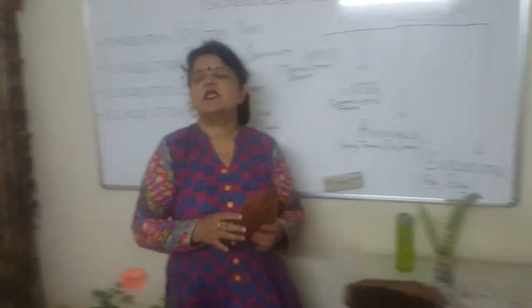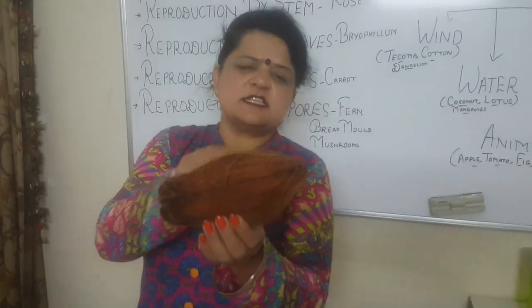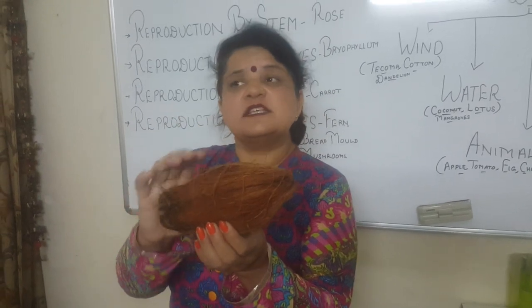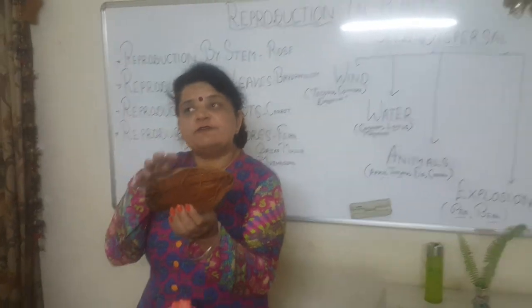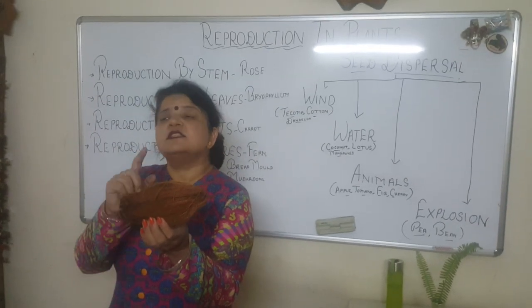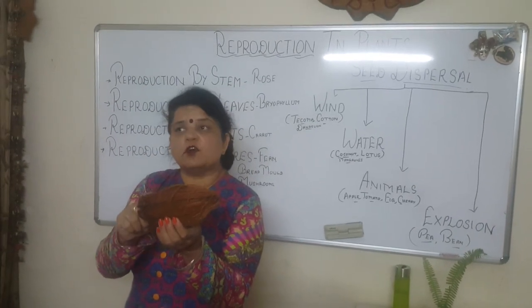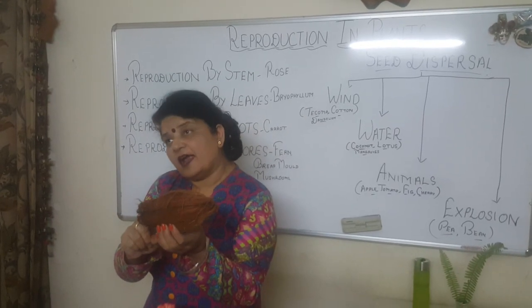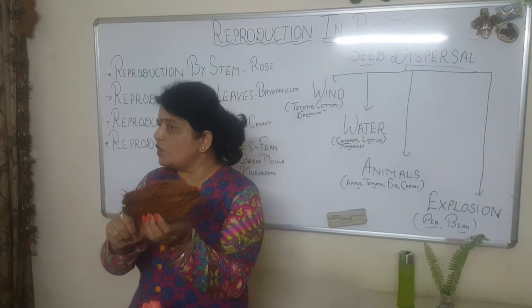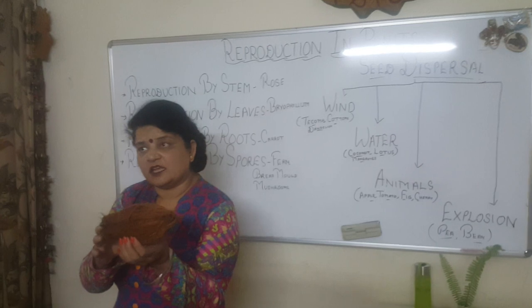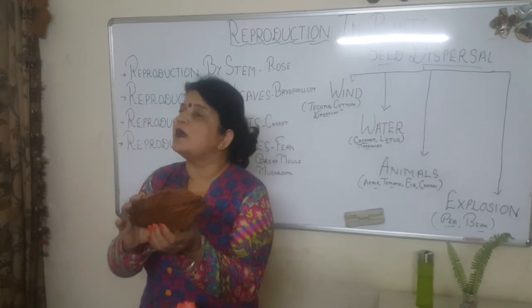Next comes dispersal by water. You can see this coconut — the outer shell is made up of many fibers and this coconut can easily float on water. It's hard to believe, but this coconut can float at a stretch for 1,000 kilometers. When it reaches the shore and gets soil contact, it starts germinating. This is dispersal by water.